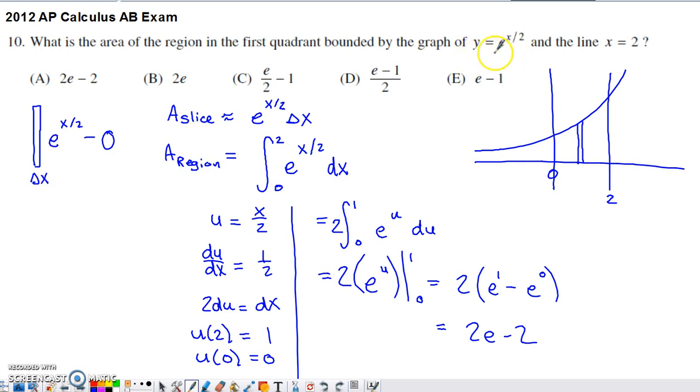You do have to kind of reason out what this graph is going to look like. E to a power is always going to be positive, and E to the 0 is going to be 1. So if you take E to the 0, which is equal to 1, and plot 0, 1, and then you also plot E to the 2 over 2, that's E to the 1st,